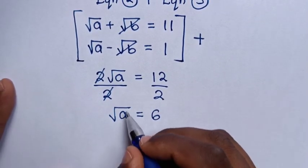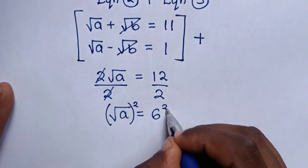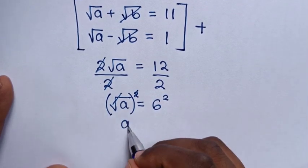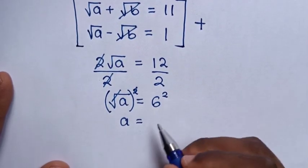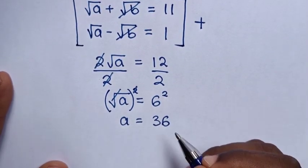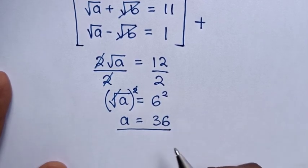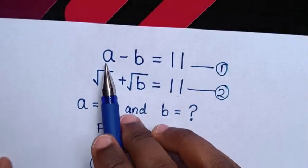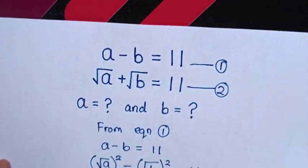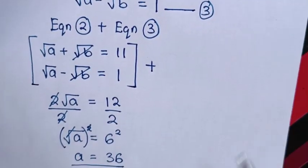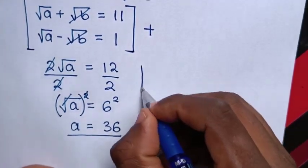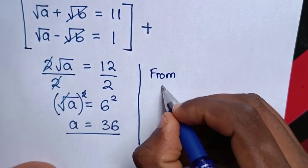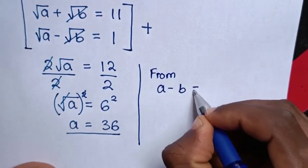To find the value of a, we square both sides. The square root cancels with the square, giving a equals 6 squared, which is 36. Now to find the value of b, we use equation 1: a minus b equals 11.